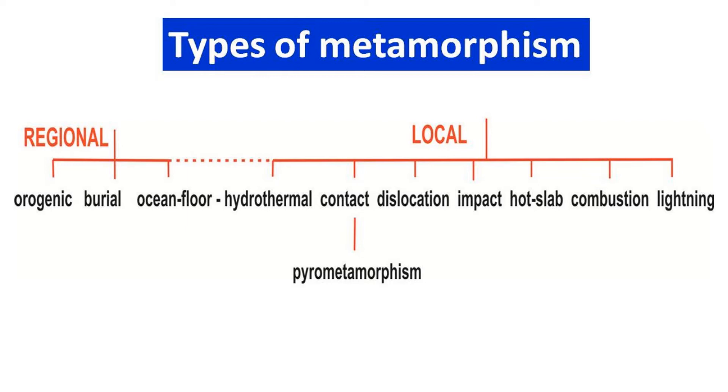Dear Learners, today we will learn about the types of metamorphism. Interestingly, the dominant distinction between the two broad categories of types of metamorphism is based on the aerial extent of the occurrence of the transformed rocks. A transformation of a pre-existing rock in solid state can occur on a small scale, called local metamorphism, or on a large scale, called regional metamorphism. These two represent two broad categories of metamorphosed rocks and they have a lot of significance.